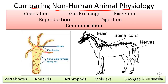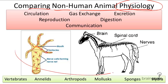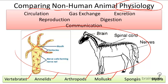Comparing non-human animal physiology. In the following videos, we will be discussing the anatomy and physiology of major organisms in the animal kingdom. They include vertebrates, annelids, arthropods, mollusks, sponges, hydra, and more.